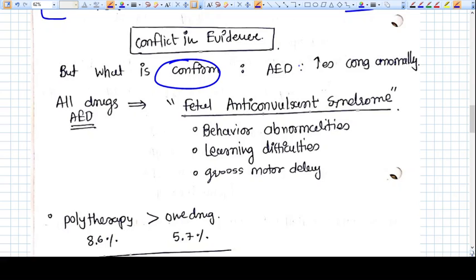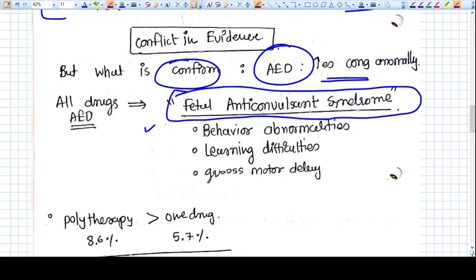What is confirmed is that every AED increases the congenital anomaly. There is a syndrome called fetal anti-convulsant syndrome. All the AEDs do fetal anti-convulsant syndrome. That includes behavior abnormalities, congenital anomalies, learning difficulties, gross motor delays, all these things. All AED can do these things.